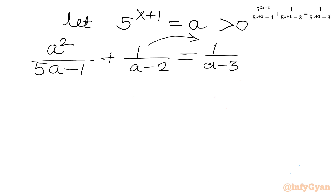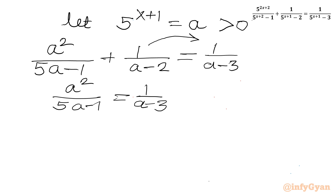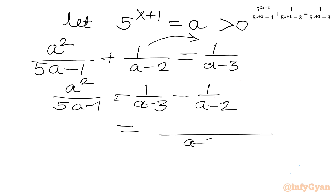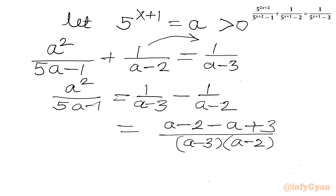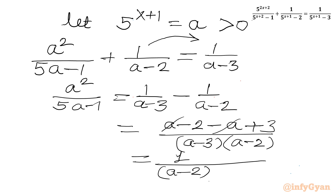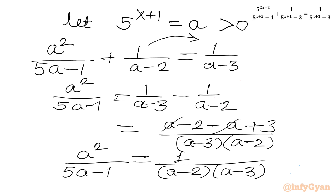I will take the second term to the RHS: a² / (5a - 1) = 1/(a - 3) - 1/(a - 2). Taking LCM on the RHS gives denominator (a - 3)(a - 2). The numerator becomes (a - 2) - (a - 3) = 1. So the RHS simplifies to 1 / [(a - 2)(a - 3)], and the LHS is a² / (5a - 1).